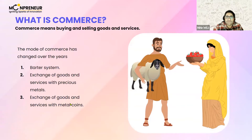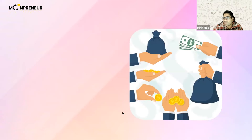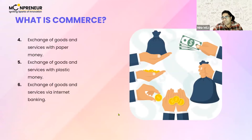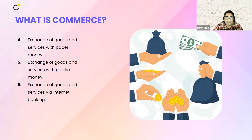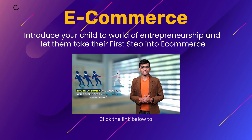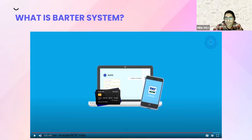Commerce has been around since humans have been around, since people started trading goods. In those early days, commerce was all about barter systems. Commerce is pretty much the exchange of goods and services. Way back when people were exchanging things, that was called bartering — the earliest form of commerce. That evolved to currency in the form of coins and paper bills. The barter system basically means exchanging goods and services without the use of money or currency.